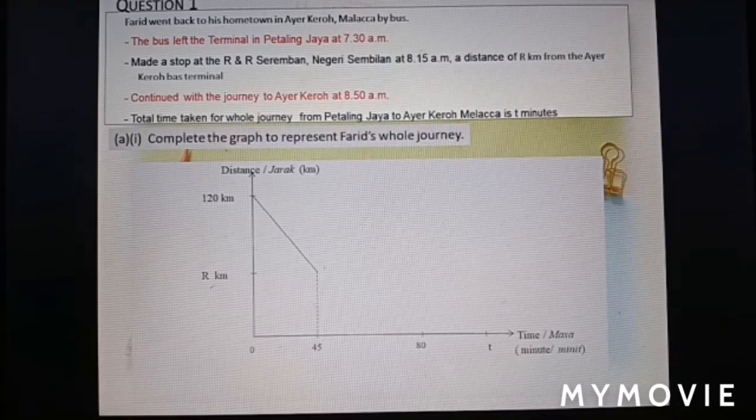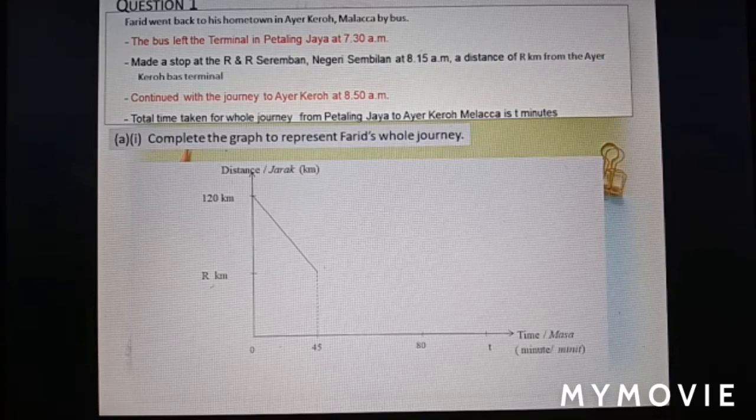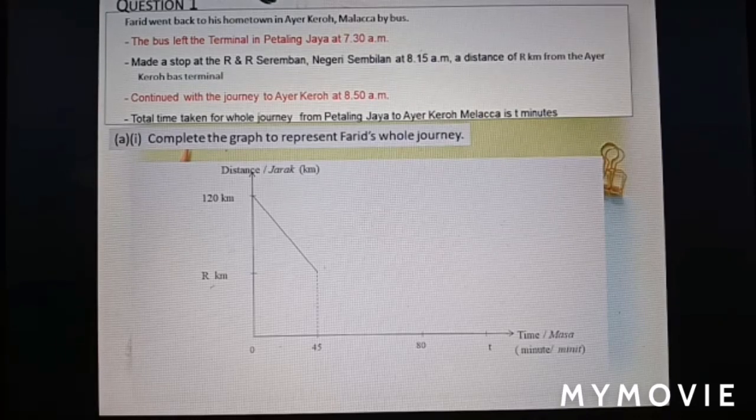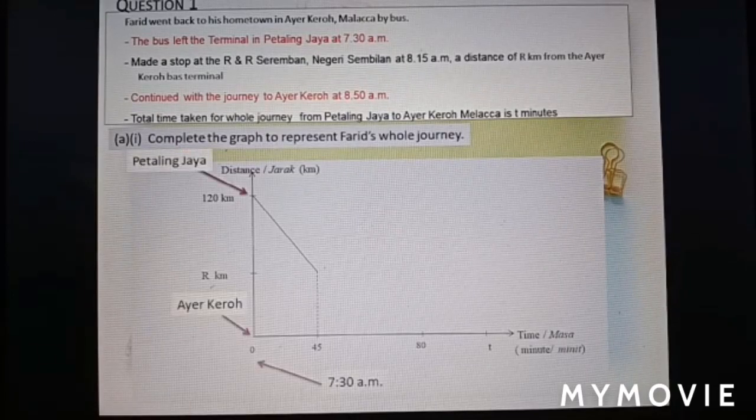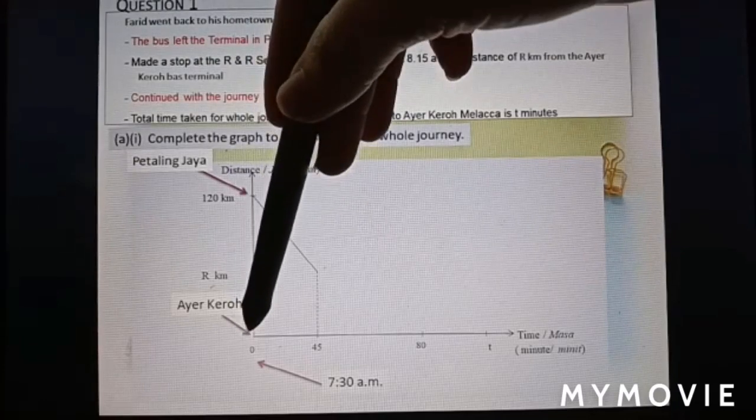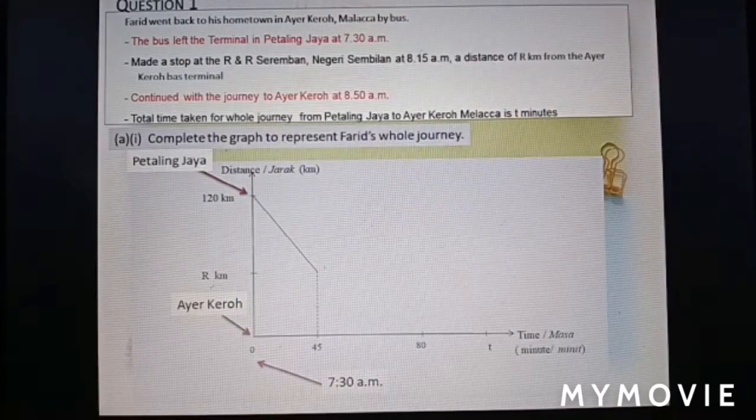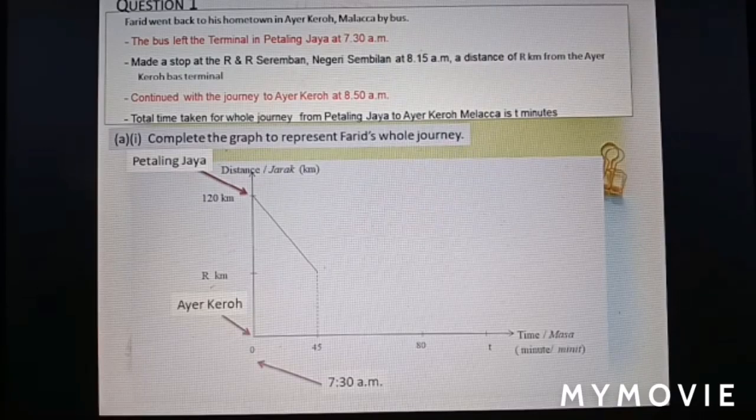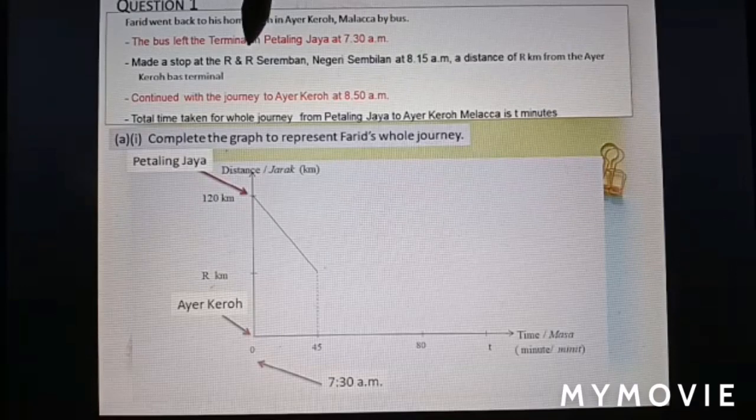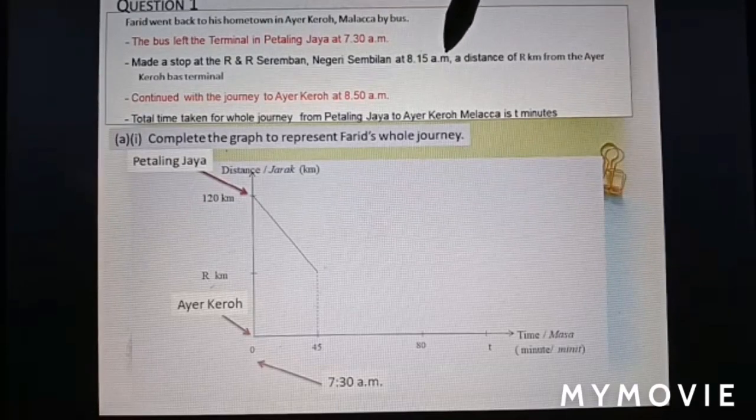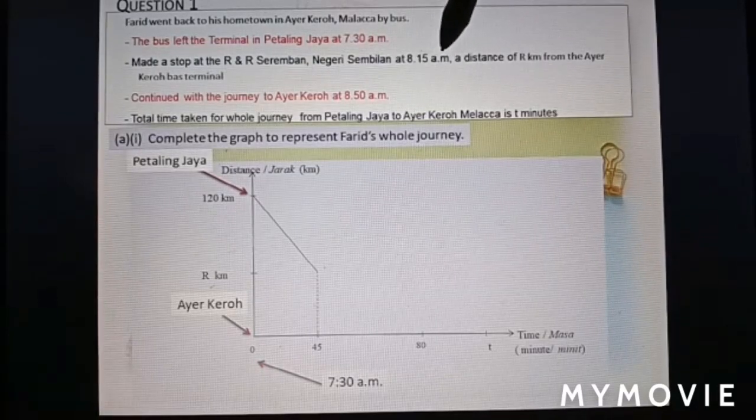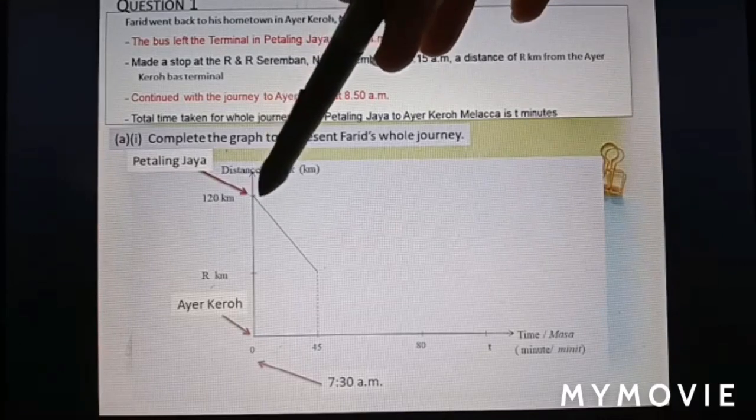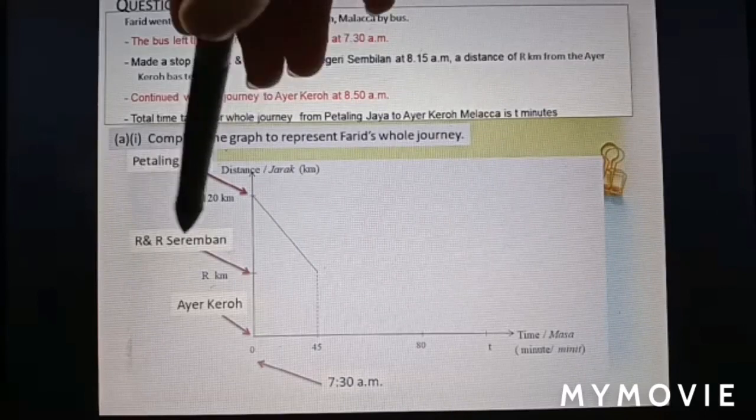So we look at the graph here. Complete the graph to represent Farid's whole journey. From first sentence, Farid went back to his hometown in Ayer Keroh, Melaka by bus. Means from Petaling Jaya, go back to Ayer Keroh at 7:30 a.m. Here, make a stop at R&R Seremban at 8:15 a.m. From 7:30 a.m. to 8:15 a.m., the duration is 45 minutes. So from here, go to here, here is R&R Seremban.